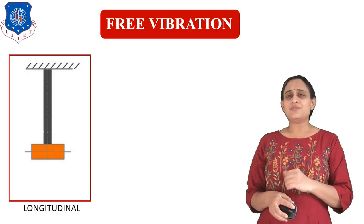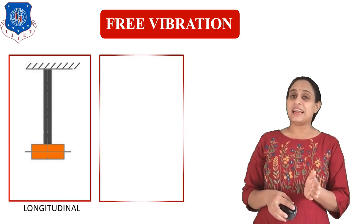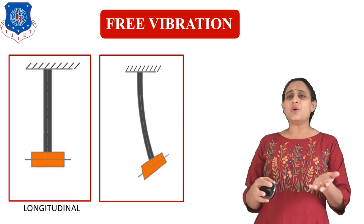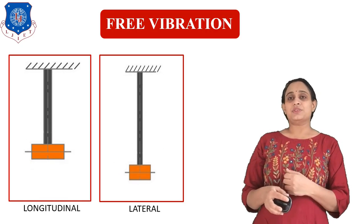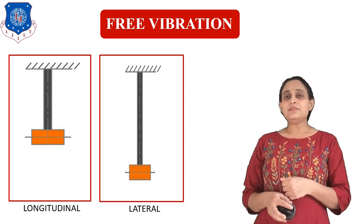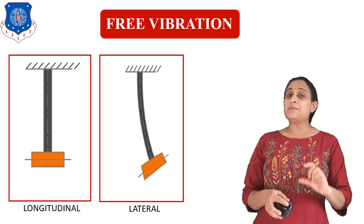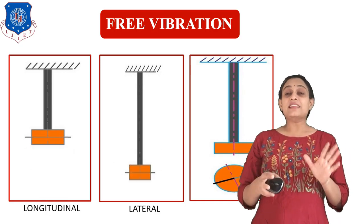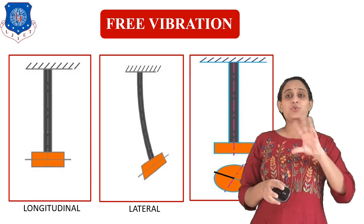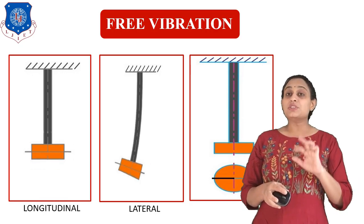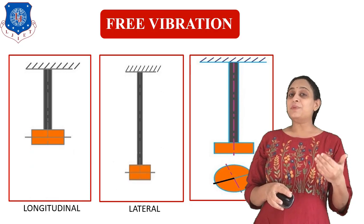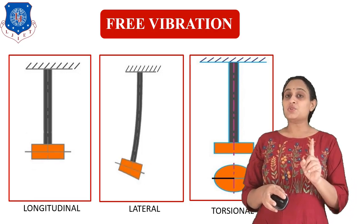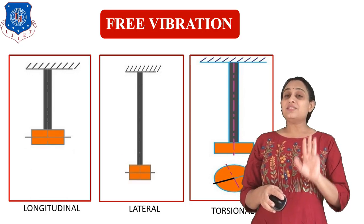Now assume there is a shaft and a mass attached to the system. If this mass moves towards the right and left side, this kind of vibration is known as lateral vibration and the motion is known as lateral motion. In another example, if we move a mass rigidly fixed at the bottom of a shaft in a circular motion and release it, that mass will move clockwise and anticlockwise. This motion is known as torsional motion and the vibration is known as torsional vibration. So there are basically three types of free vibration: longitudinal, lateral, and torsional.